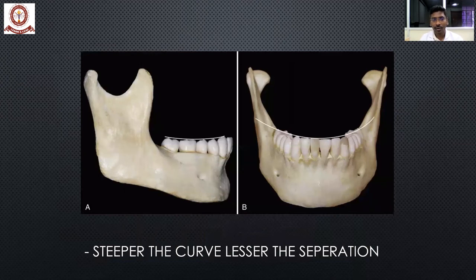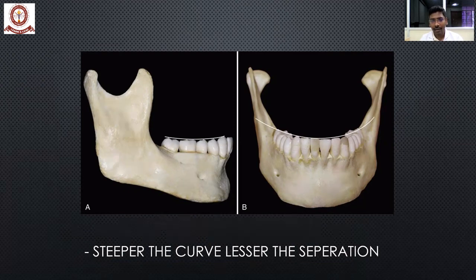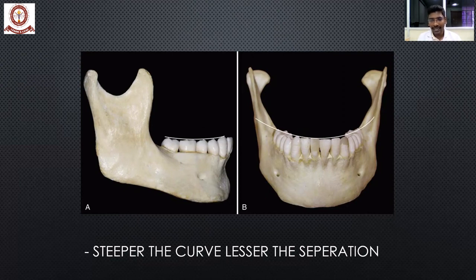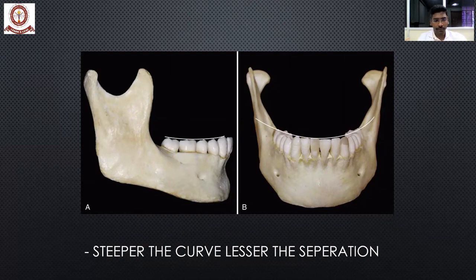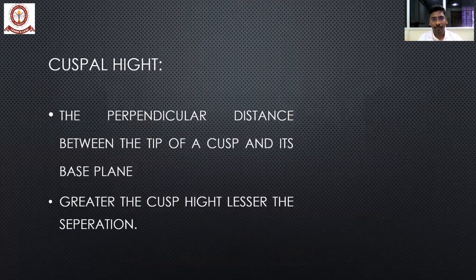The curve of Wilson is the mediolateral curve. It starts from the buccal cusp on one side, travels to the palatal cusp, and ends at the buccal cusp on the opposite side. In the maxilla this curve is convex, and in the mandible it is concave. When condylar guidance is greater and separation increases, we increase these compensating curves so that the denture teeth maintain contact even during protrusive or lateral mandibular movement, thus maintaining denture stability.